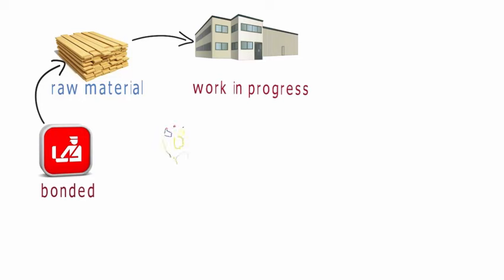While the wood is being transformed, factory workers will use items such as cloths and cleaning agents to clean the parts of the table. These items are known as floor stock inventory. They are used during production but do not become part of the final product.